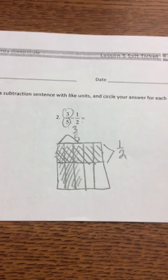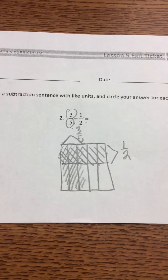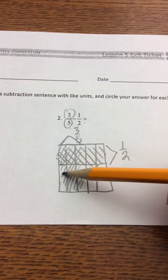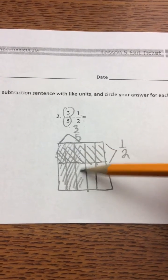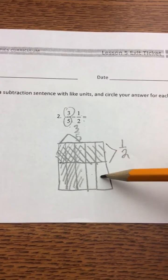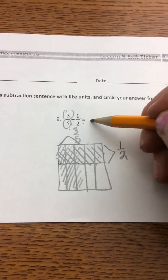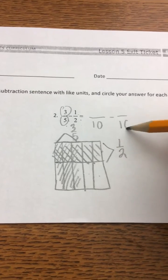Now we can find our equivalent fractions. In my area model, I see that I now have 1, 2, 3, 4, 5, 6, 7, 8, 9, 10 pieces, which means my new denominator, or my new unit, is 10.